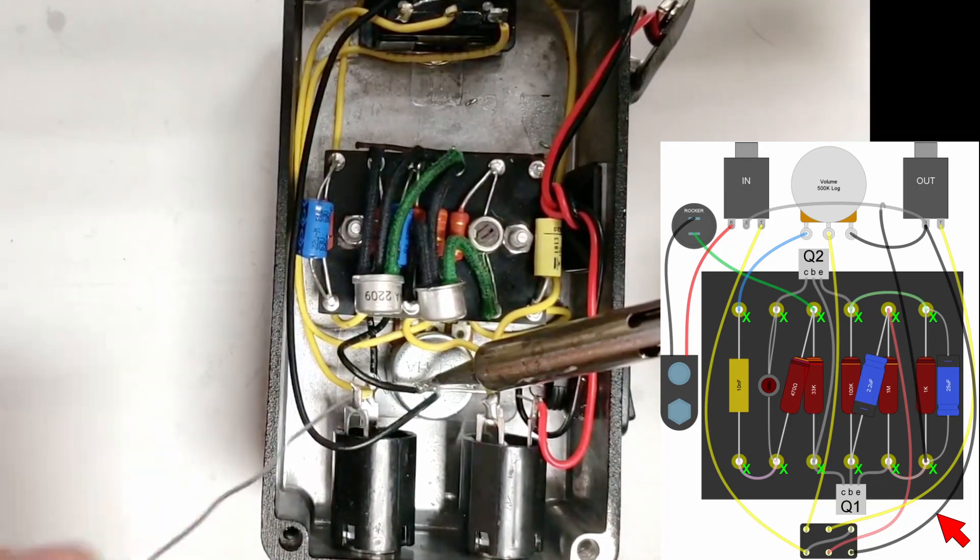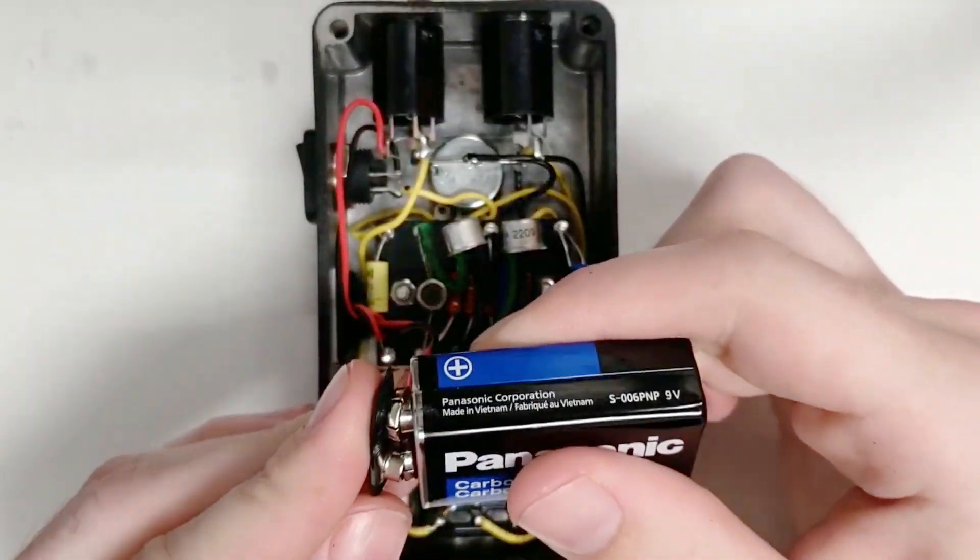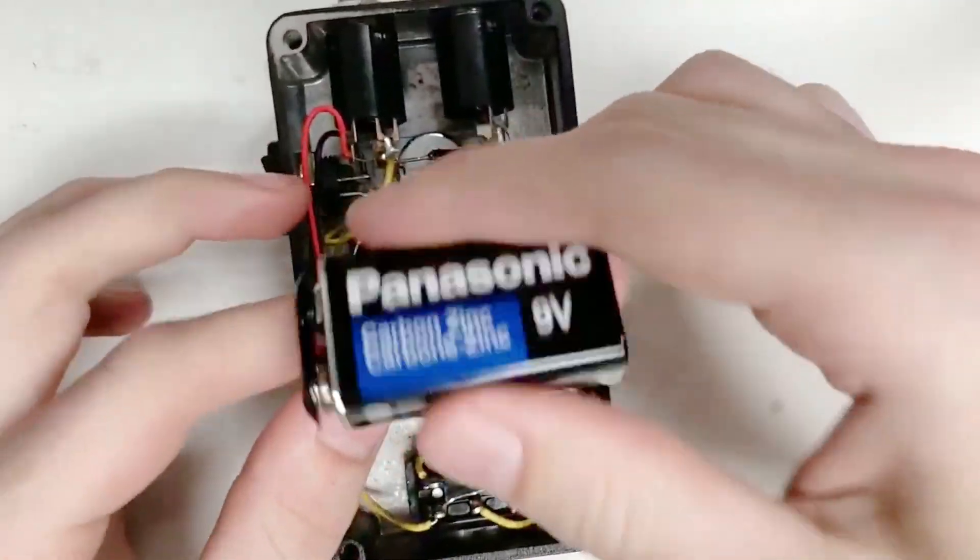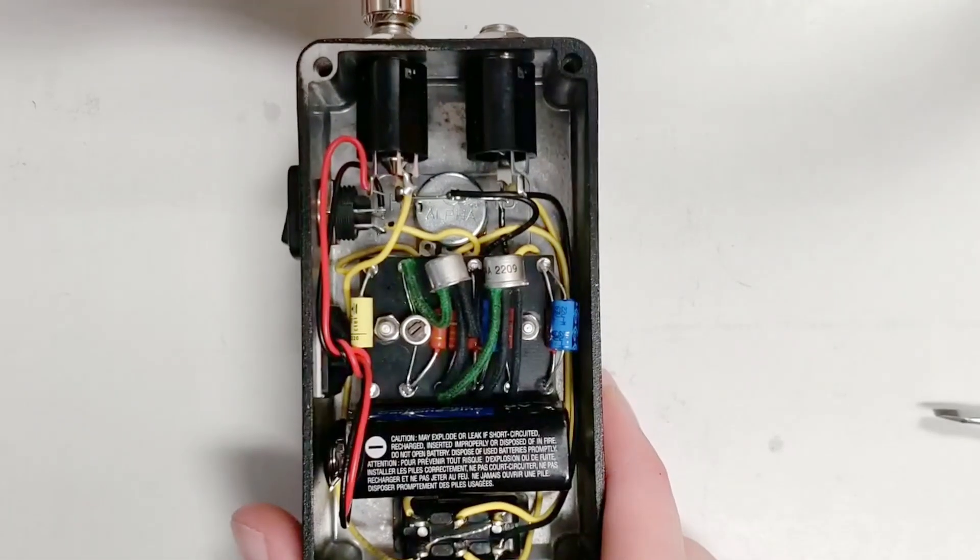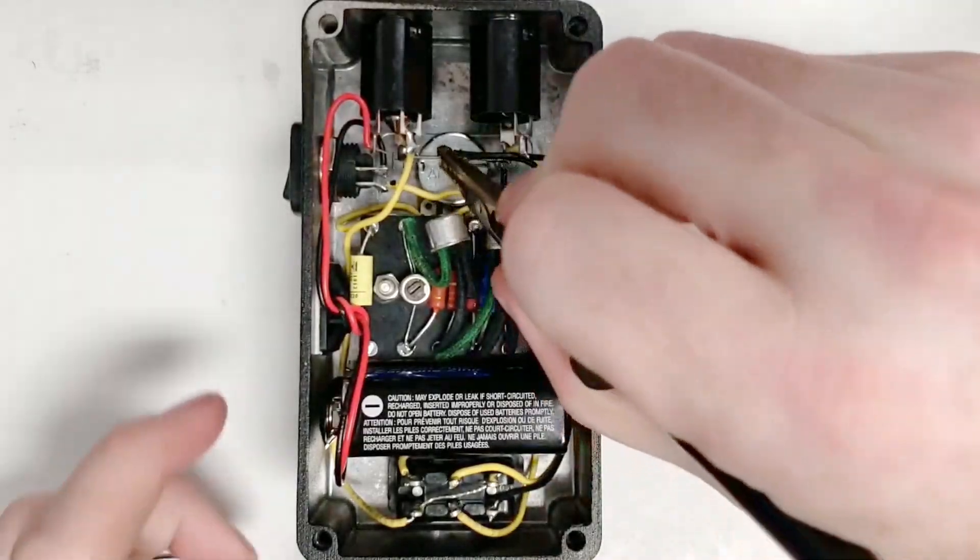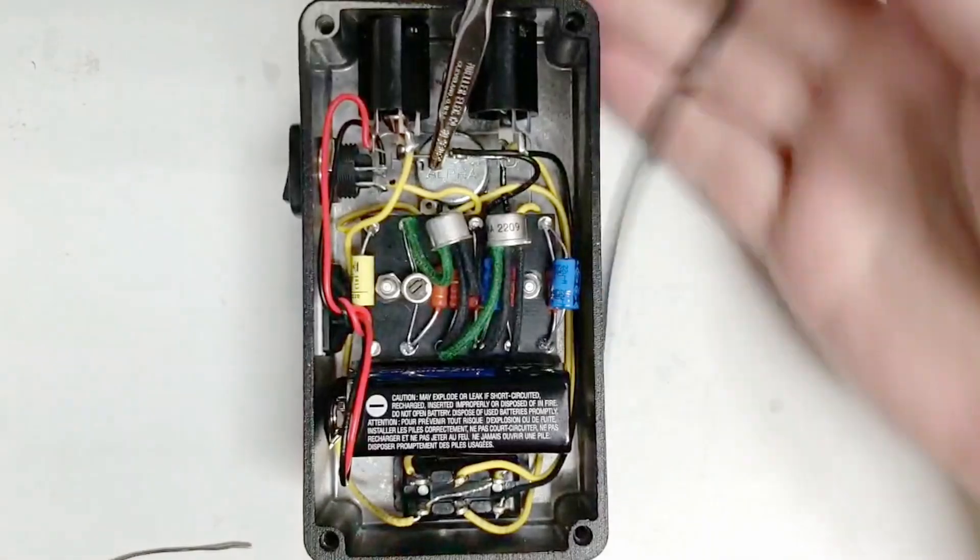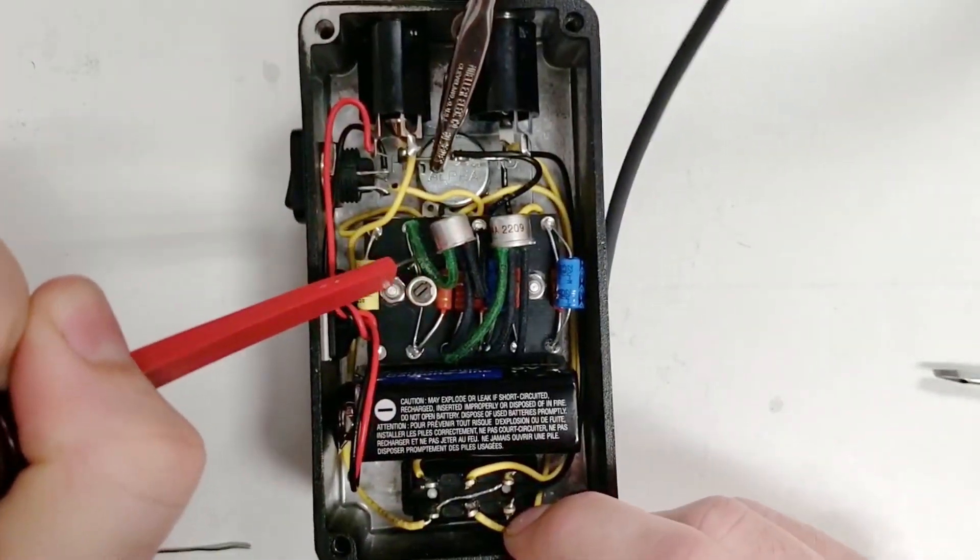At this point, all the internals are wired up, and we can use the internal trim pot to set the bias. We'll make sure a battery is installed, the battery switch is turned on, and a mono plug is inserted into the input jack. With a multimeter, connect the leads to ground on the ground bus and Q2's collector via the trim pot leads.